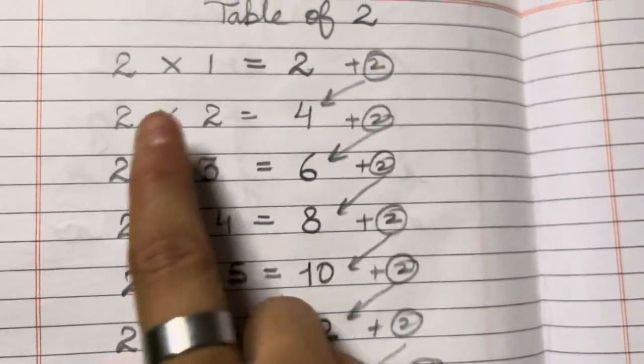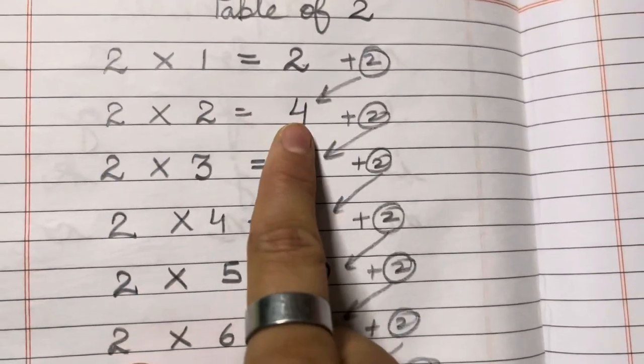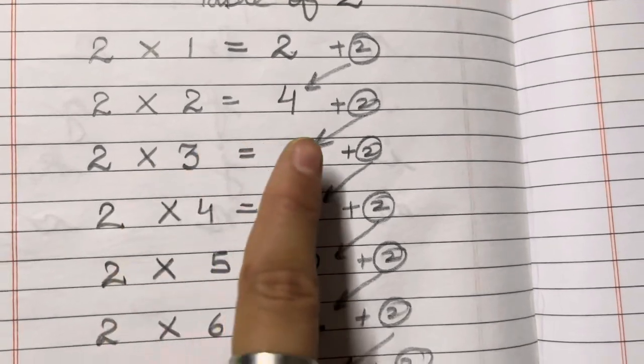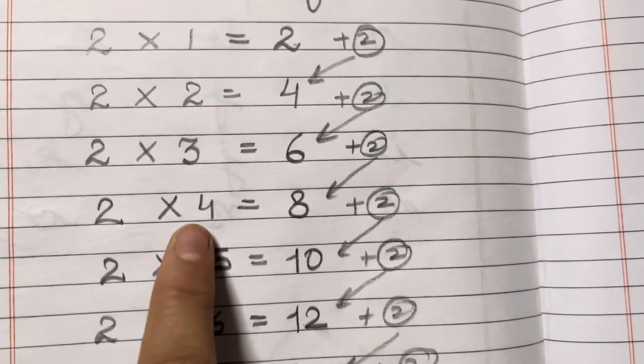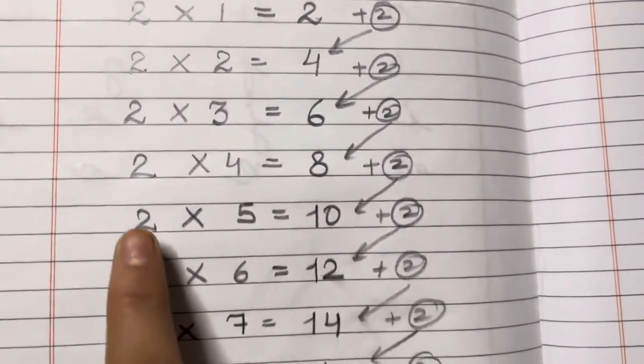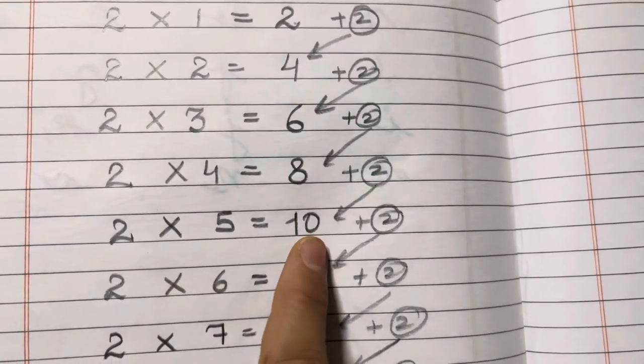2 1s are 2, 2 2s are 4, 2 3s are 6, 2 4s are 8, 2 5s are 10.